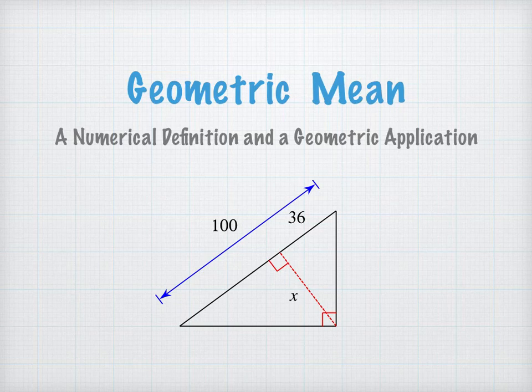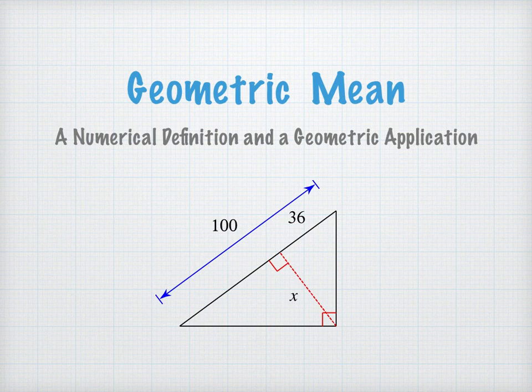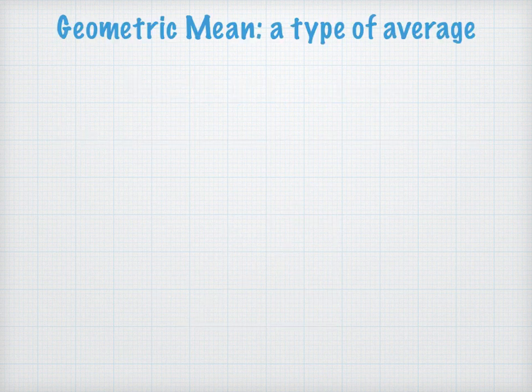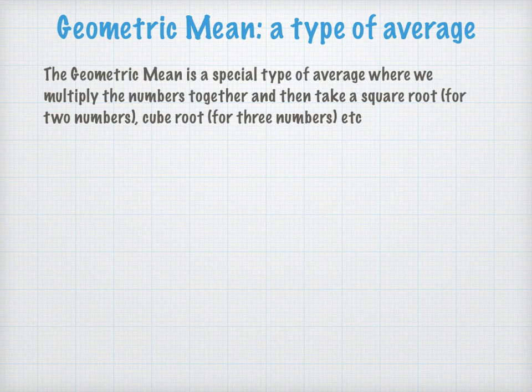In this video we will look at geometric mean. We'll start with the numeric definition and then look at geometric applications. Remember the word mean in math — we typically think of an arithmetic mean as an average. How we find the arithmetic mean of a set of numbers is we add the numbers and then divide by the number of items in the set. But in this video we'll look at geometric mean, which is a different type of average, where we multiply the numbers together and then take a square root.